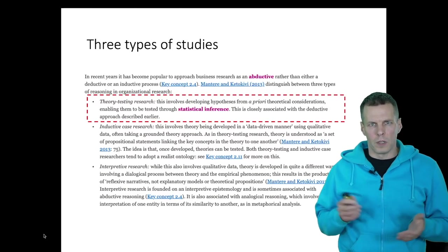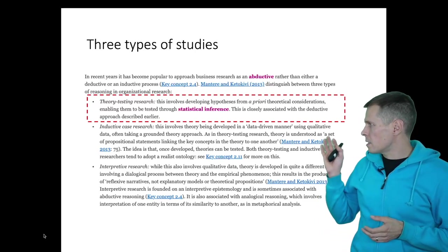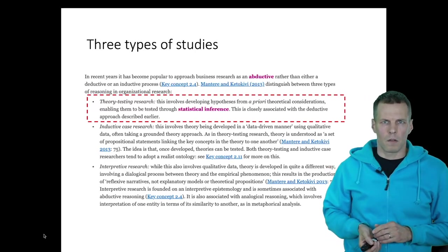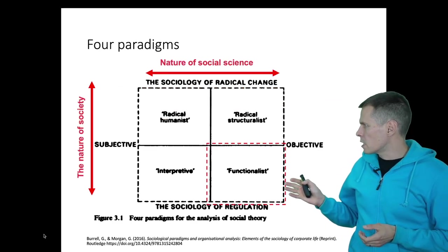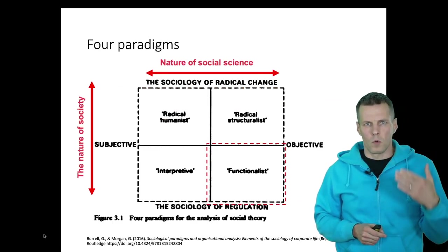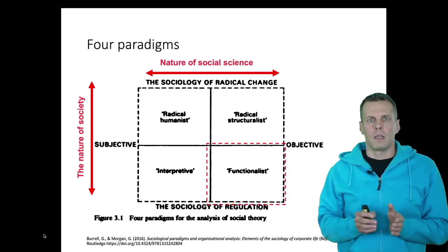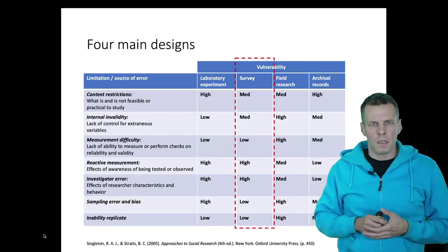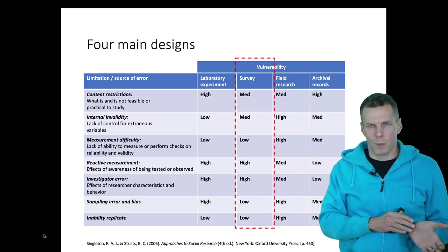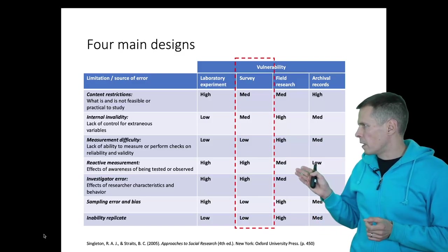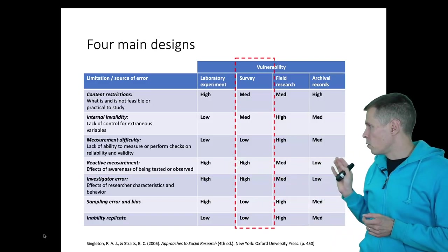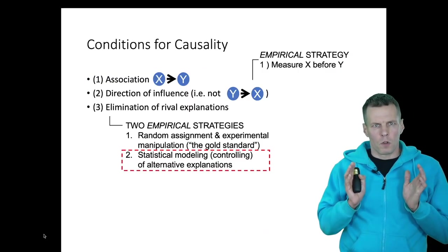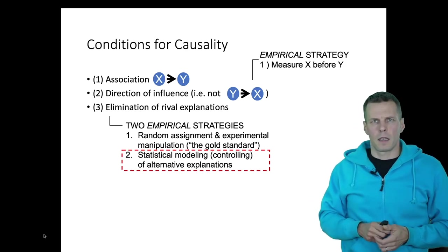Let's take a look at how this positions within the frameworks we have covered thus far. This is a theory-testing study, so they present theory first and then present the statistical test of that theory. In the paradigmatic framework, this belongs to the functionalist paradigm — they assume that the world is real and independent of observation, instead of studying people's perceptions as an interpretive study would. This is a survey study because they ask people to provide data; they don't do observations, manipulate like in an experiment, or use data collected by somebody else as in archival research. The study is focused on causality and applies a statistical modeling strategy.